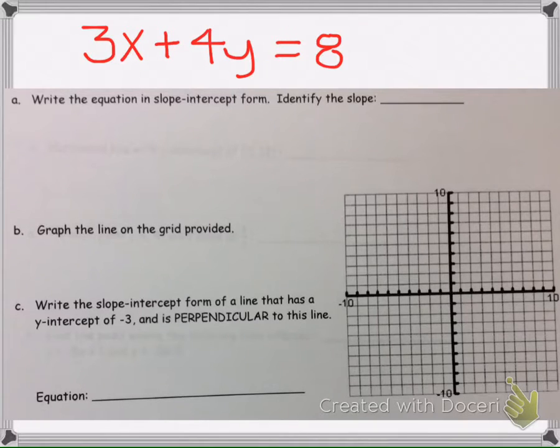Here we are asked to consider 3x plus 4y equals 8. Part A asks us to write the equation in slope-intercept form. So slope-intercept form is y equals mx plus b. So our goal is to get the y variable isolated. Let's go ahead and do that.